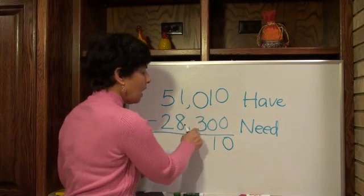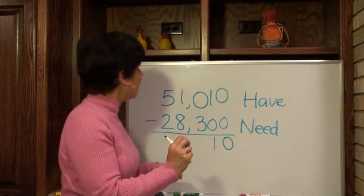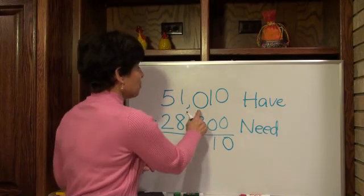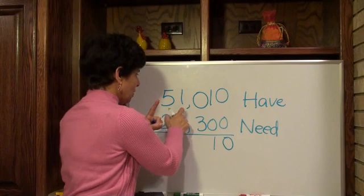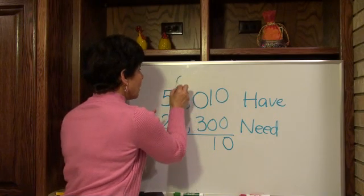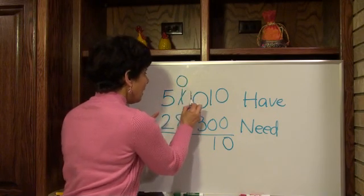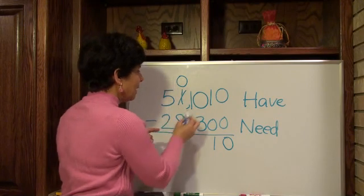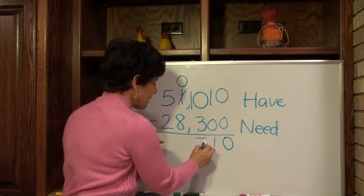Now let's look at this. I have zero cups of sugar, I really need three. Do I have enough? No, I don't. So I go to my neighbor. He has one cup of sugar, he gives it to me. Now he has zero, and I have ten. Ten take away three is seven.